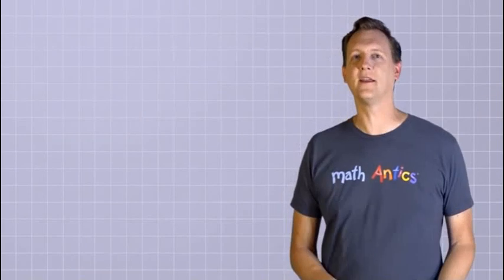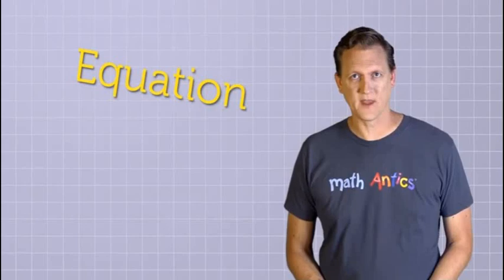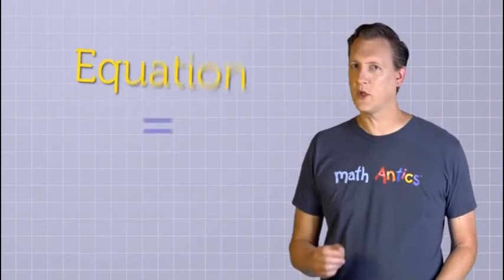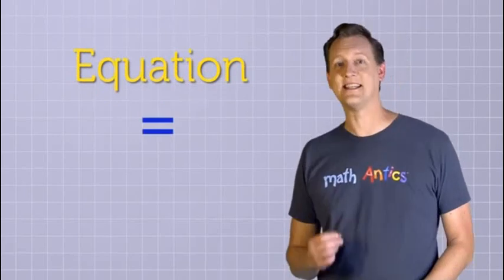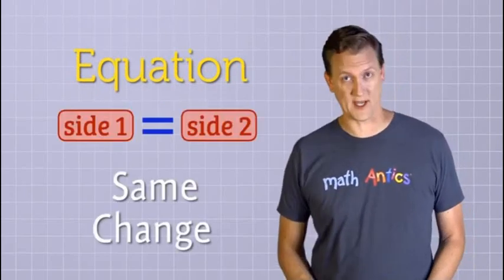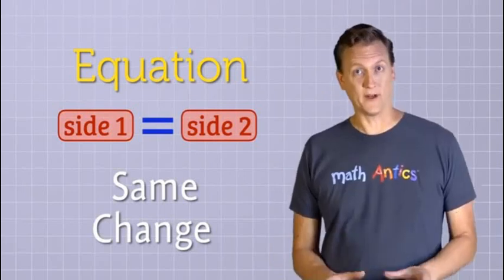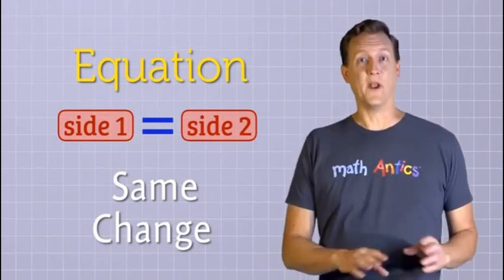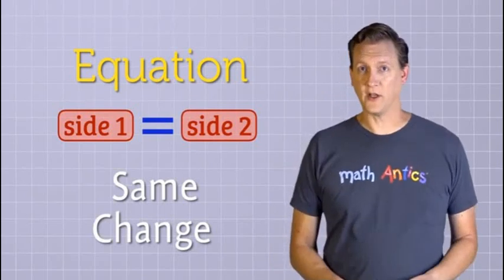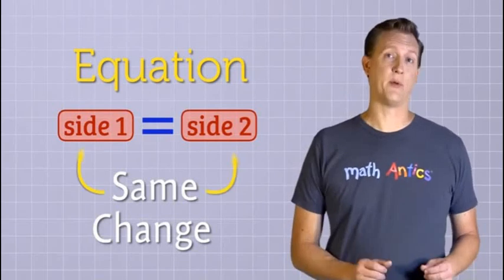So, how do we avoid that? How do we avoid getting an equation out of balance? The key is that whenever we make a change to an equation, we have to make the exact same change on both sides. That's so important, I'll say it again. Whenever we do something to an equation, we have to do the same thing to both sides.